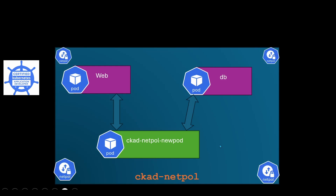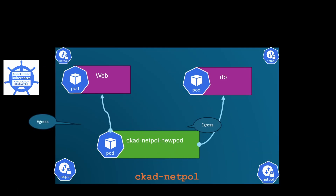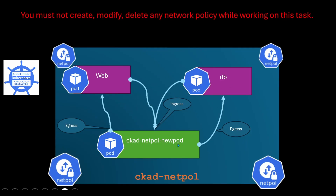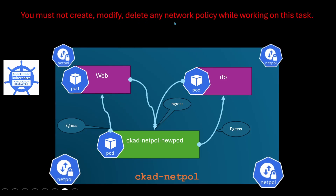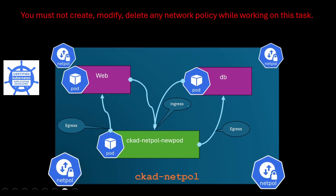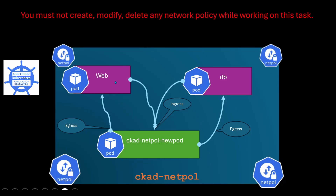But due to network policies, this is not allowed. We want to enable egress and ingress between these two pods and this pod. The problem here is that you must not create, modify, or delete any network policies while working on this task. You need to think about how you can enable ingress and egress traffic so that this pod can communicate with web and DB.